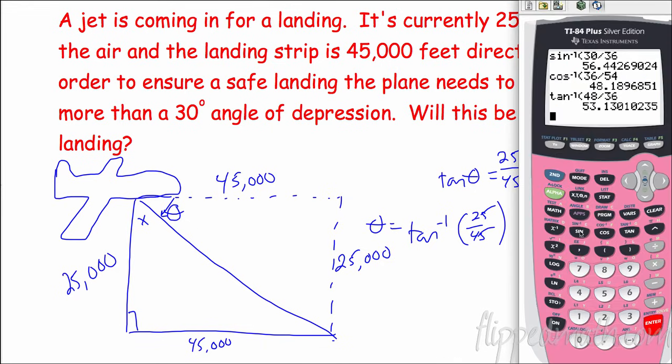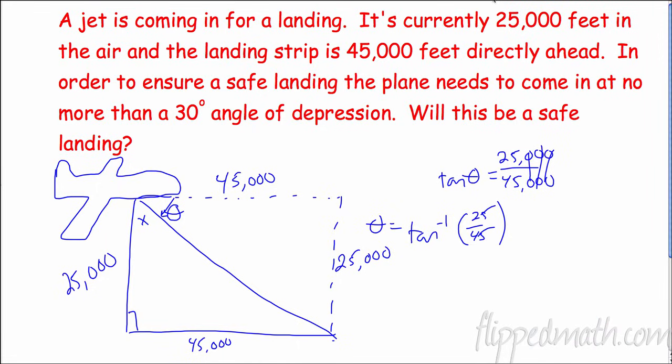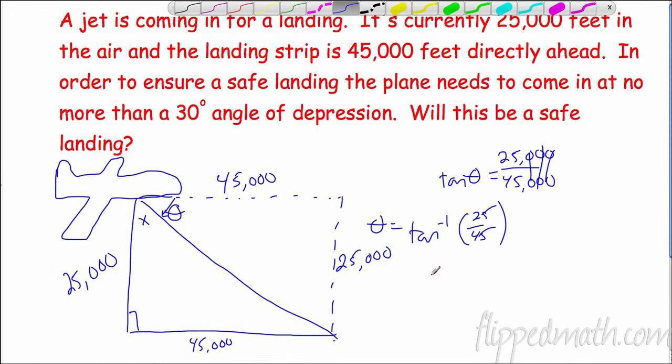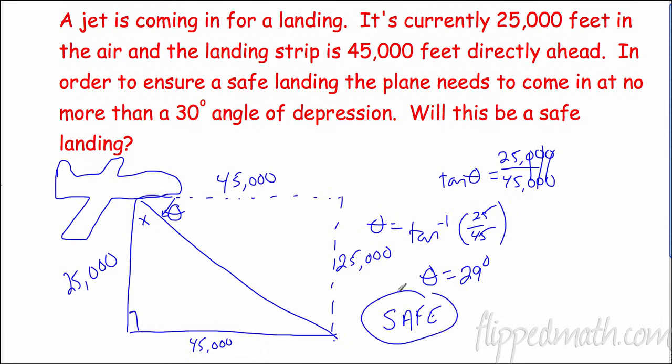So theta equals inverse tangent of 25 over 45. See what we get. Second inverse tangent of 25 divided by 45, and we get 29.0, so 29 degrees. So theta is 29 degrees. Now let's reflect: are we answering the question? Will this be a safe landing? 29 degrees - that doesn't answer that. In order to ensure a safe landing, the plane needs to come in at no more than 30. Is that more than 30? No, that's less. So yes, this is a safe landing.